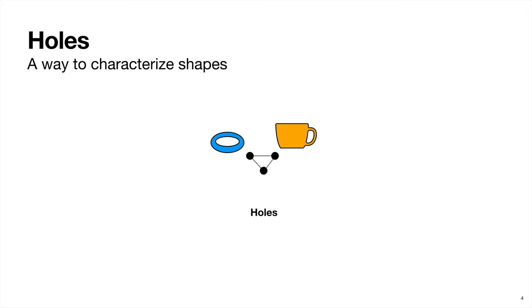So one way we can characterize and group shapes together is by counting holes. And just like before, when we generalize triangles into simplexes, we can generalize holes as well.